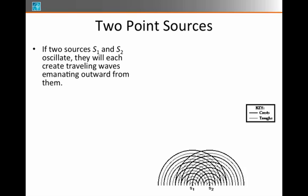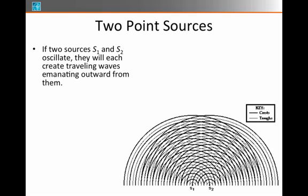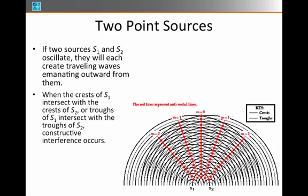When the antinodes overlap with one another, I get constructive interference, and you see that in fact those regions of constructive interference fall along lines. These are sometimes called antinodal lines.